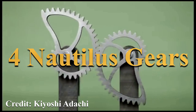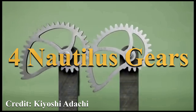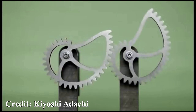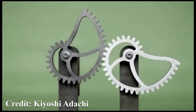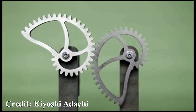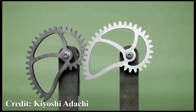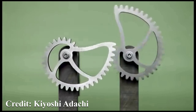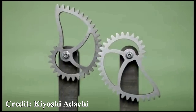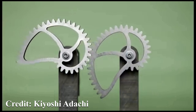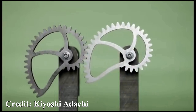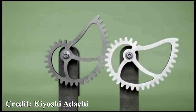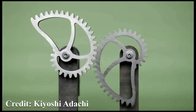Instead of being totally round, Nautilus gears take their cue from the Fibonacci spiral. The result is that at the very end of the rotation, the two big flat sides hit against each other before the next turn starts. It's another mostly pointless exercise, but these gears do exhibit an interesting quality: if one gear is moving at constant speed, the other will speed up and slow down during the course of its rotation. That's got to be good for something!